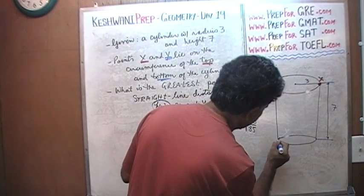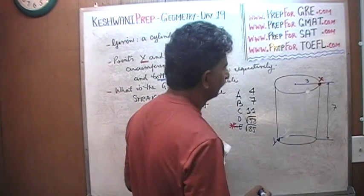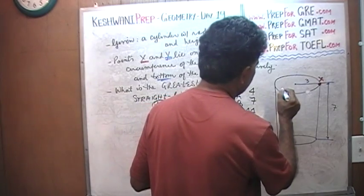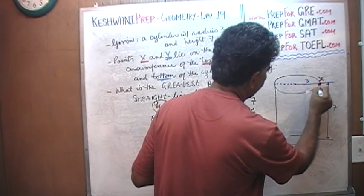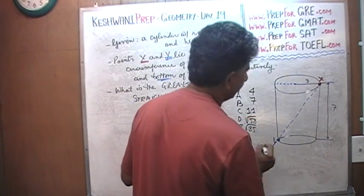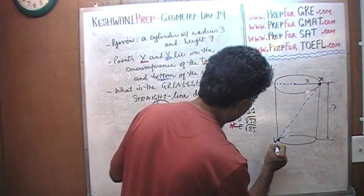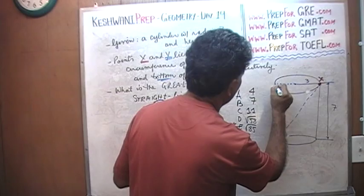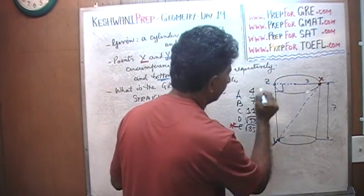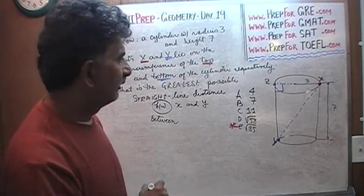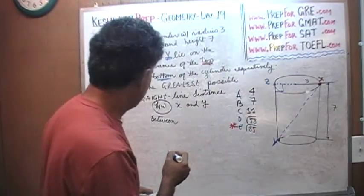Because we want the distance to be as large as possible. Now the question is, what are we dealing with? We're dealing with, believe it or not, a right angle triangle right here. Let's give it a name so we can talk about it. This is your Y, this is your X, I'm going to call this Z. So XYZ is the right angle triangle. How much is X to Z in the triangle?